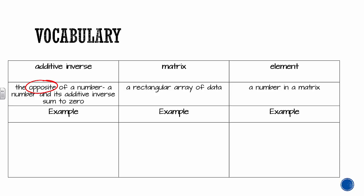A matrix is a rectangular array of data. You're going to see later today that we box up matrices with brackets, and then we have numbers in them. An element is just one of those numbers in your matrix.